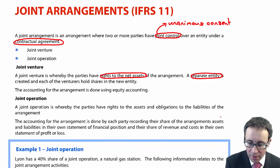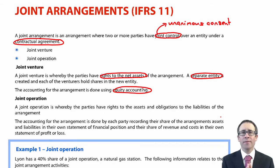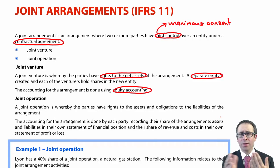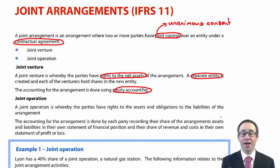If you have a joint venture, the key point is that you don't have control, so we can't consolidate. You have a kind of influence — you can't pass decisions unilaterally or force your ideas, but you can block things from happening because it requires unanimous consent. If one party disagrees, they can block the motion. So you have quite significant influence — perhaps a little more than significant influence. Therefore, we account for it exactly like an associate using equity accounting.